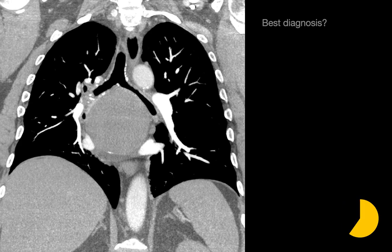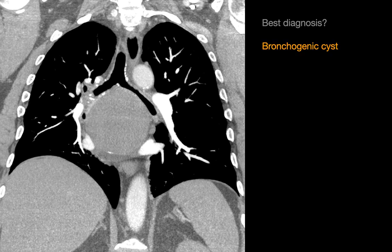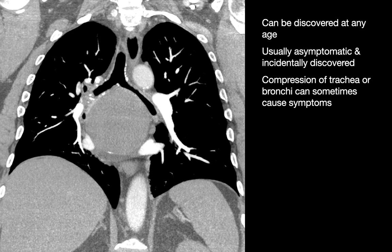In this patient, we might have observed splaying of the tracheal bifurcation on the frontal chest radiograph, and a relatively homogeneous density in the subcarinal region on the same chest radiograph. On this coronal CT image, we recognize a rather large, round, well-circumscribed mass in the subcarinal region that is isoattenuating to soft tissue. The best diagnosis in this case is a bronchogenic cyst. Bronchogenic cysts can be discovered at any age, and they're usually asymptomatic and an incidental discovery. However, with larger bronchogenic cysts, mass effect can result upon the trachea or bronchi, potentially leading to symptoms.